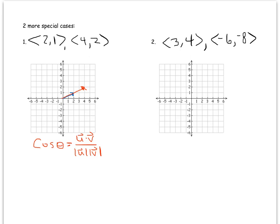What I like to do with these problems is go off to the side. Let's call this vector u and this one v. I find the pieces I need. The magnitude of u is the square root of 2 squared plus 1 squared, which is the square root of 5.